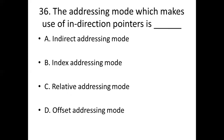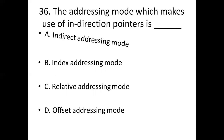Question 36: The addressing mode which makes use of an indirection pointer is? Option A: indirect addressing mode. Option B: index addressing mode. Option C: relative addressing mode. Option D: offset addressing mode. Answer: Option A — indirect addressing mode.